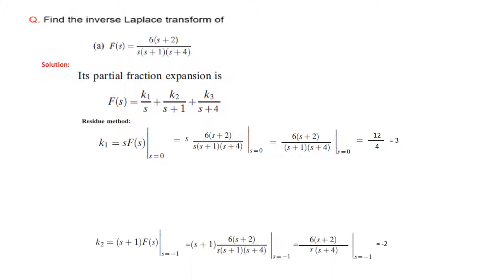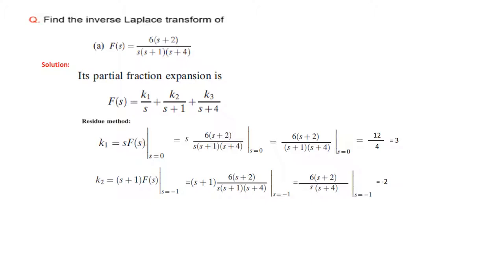Similarly, we will find k2. For k2, we have to multiply by the denominator of k2, that is s plus 1. So we multiply f(s) by s plus 1, and the condition now is if we put s plus 1 equals 0, therefore s becomes equal to minus 1. We plug in the value of f(s) and cancel the common terms. This becomes the simplified form, and putting s equal to minus 1 here, the answer will be minus 2.